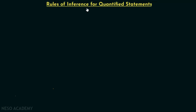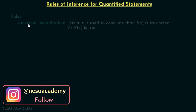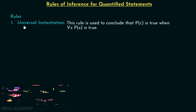From this presentation onwards, we are starting with this new topic: Rules of Inference for Quantified Statements. In this particular presentation, we will discuss two important rules of inference for quantified statements. Here is rule number one, that is universal instantiation.